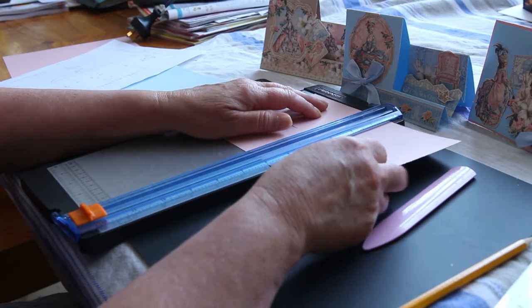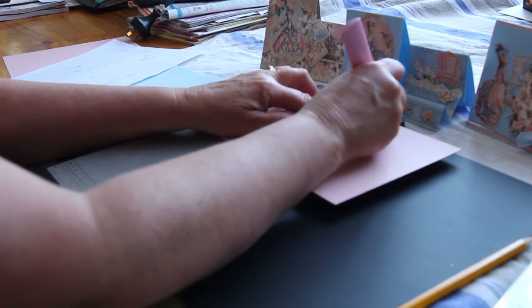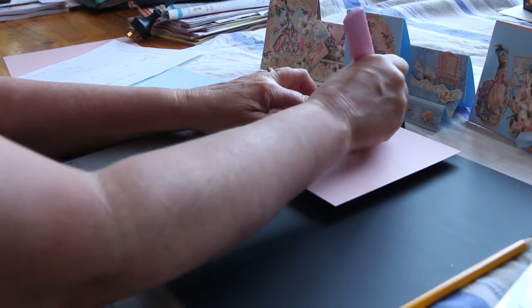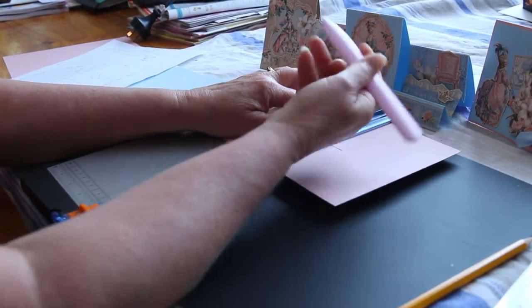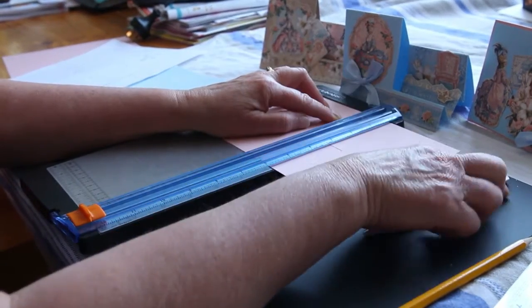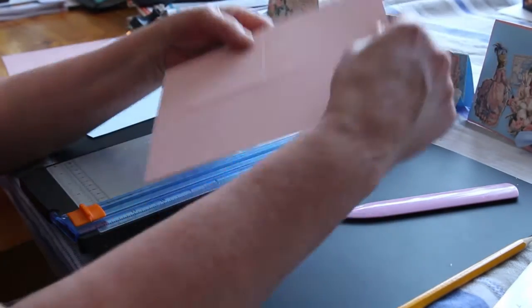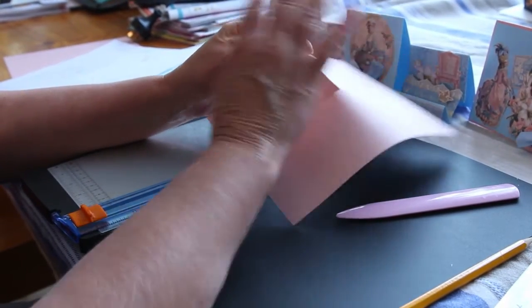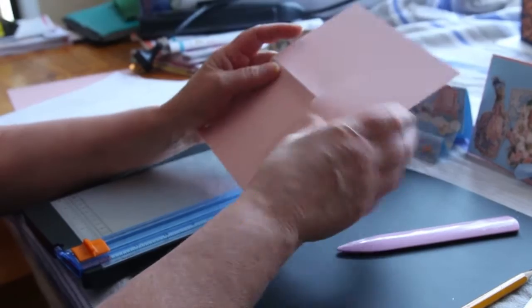So from here we go to 10 and a half, and we are going to just make a line with our scorer on that side. So that's a fold there, and that's all we do on that side.